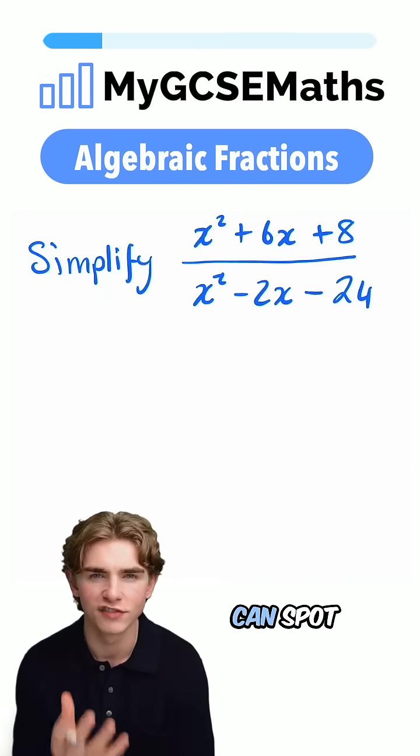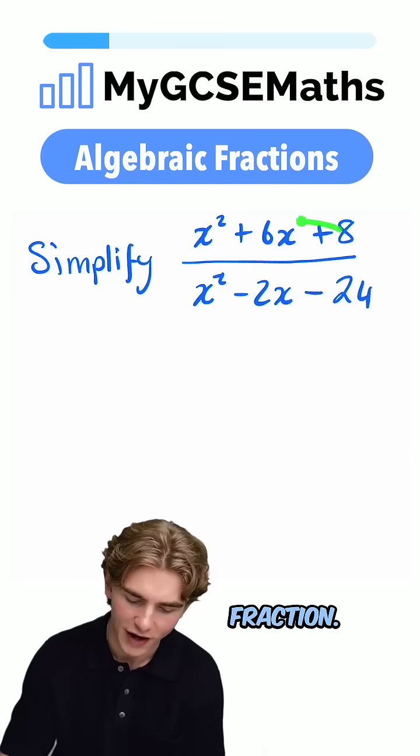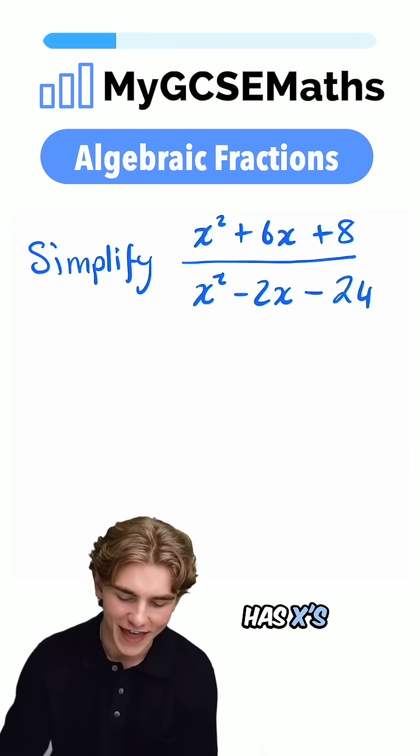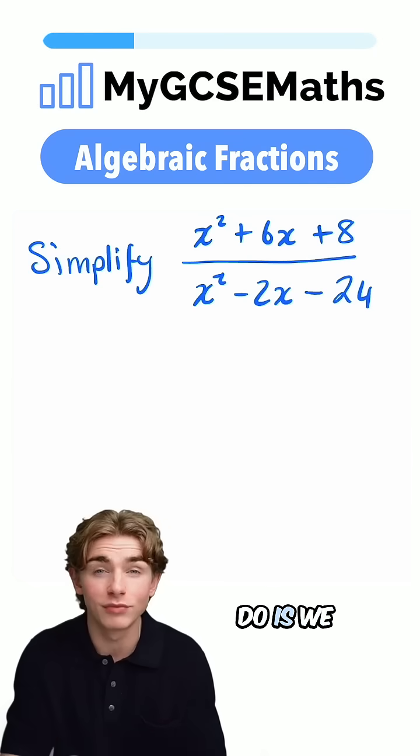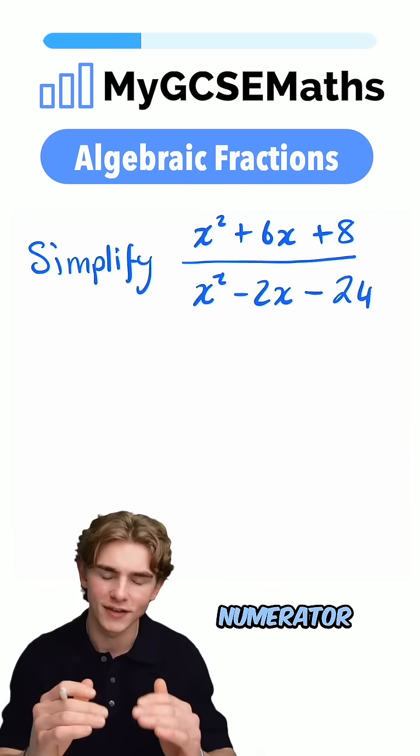Now, if we see a question like this, we can spot that we have an algebraic fraction. We have a fraction which has x's and also x squareds on the top and the bottom. What we need to do is try and factorize the numerator and the denominator.